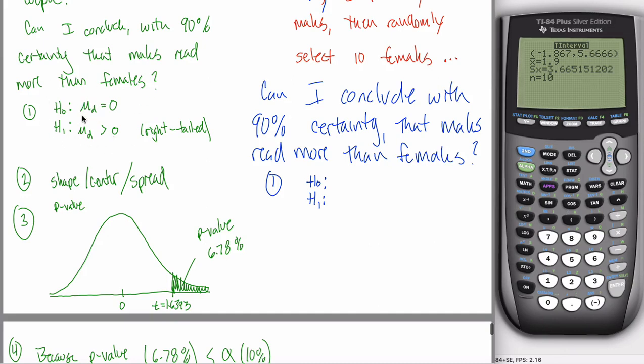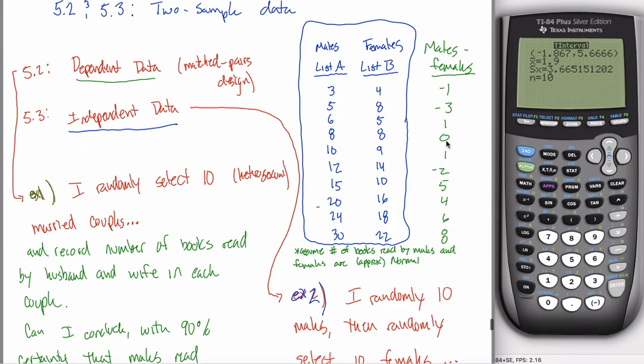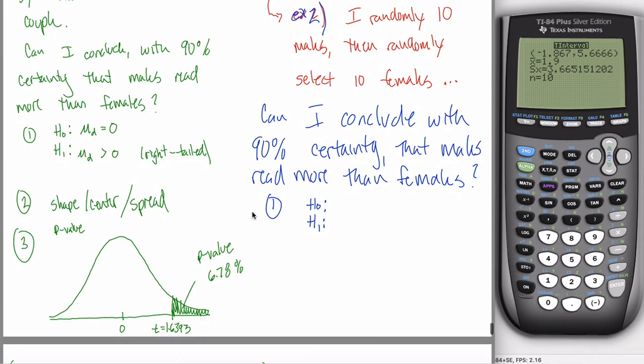Why? Because over here, I talked about the mu of the differences. I referred to this green data over here. But now this green data makes no sense at all because the observations are not connected. I can't subtract them. So I can't have the same null and alternative hypotheses. It'll be the same idea. The alternative hypothesis will still be the claim and the claim is still that males read more than females. And the null hypothesis will still be the skeptical point of view.